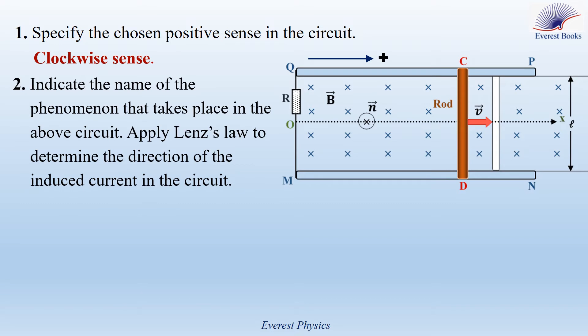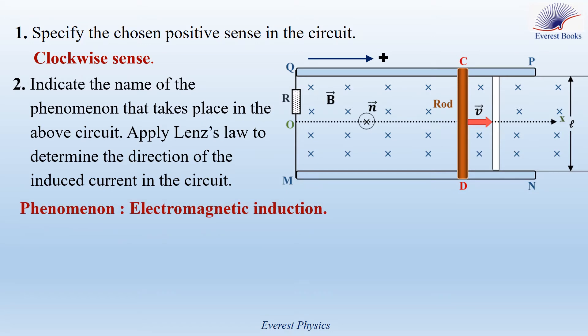Question 2: indicate the name of the phenomenon and apply Lenz's law to determine the direction of the induced current. The phenomenon is called electromagnetic induction. To apply Lenz's law, we follow two steps. First, determine the direction of the Laplace force. Second, use the right-hand rule to determine the direction of the induced current.